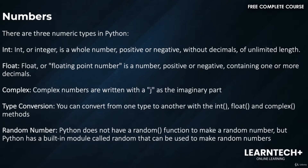You can convert from one type to another with the int, float, or complex methods. For random numbers, Python does not have a random function to make a random number, but Python has a built-in module called random that can be used to make random numbers.